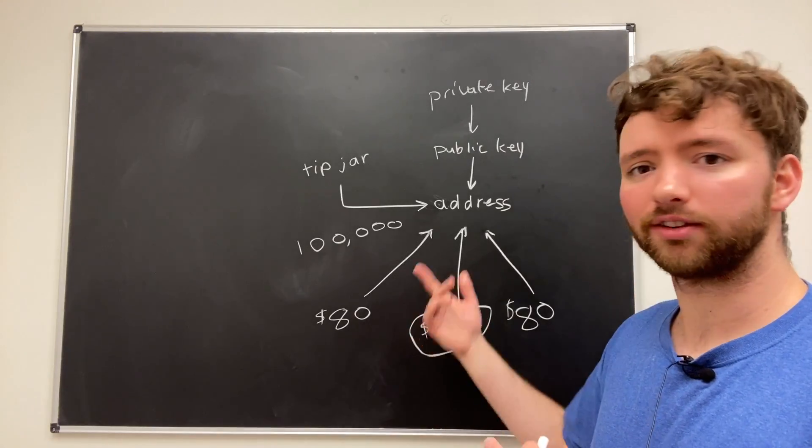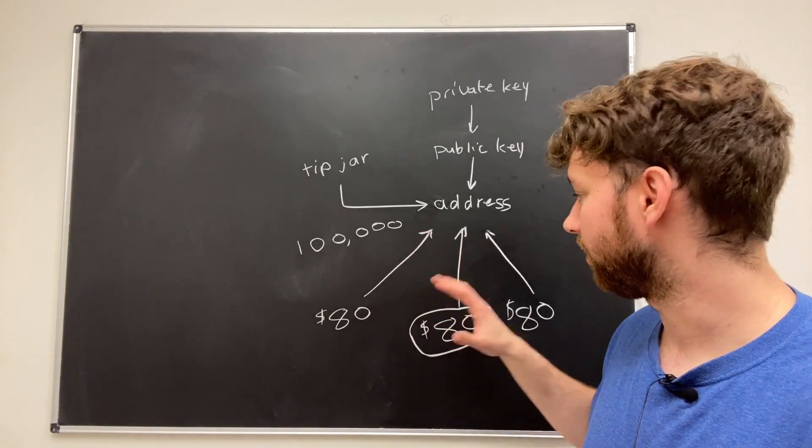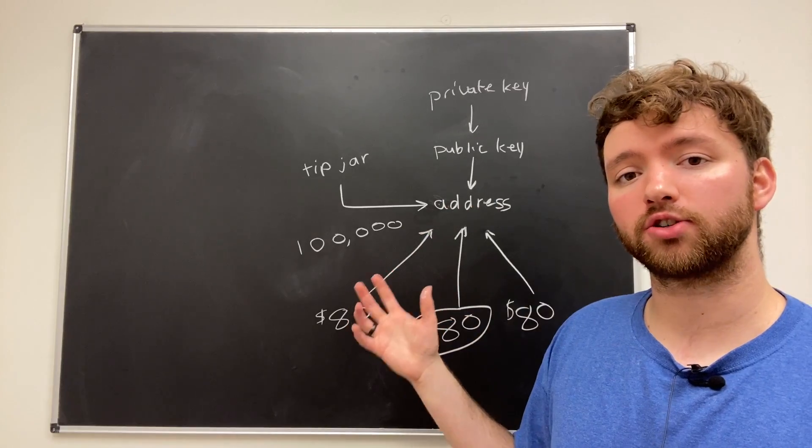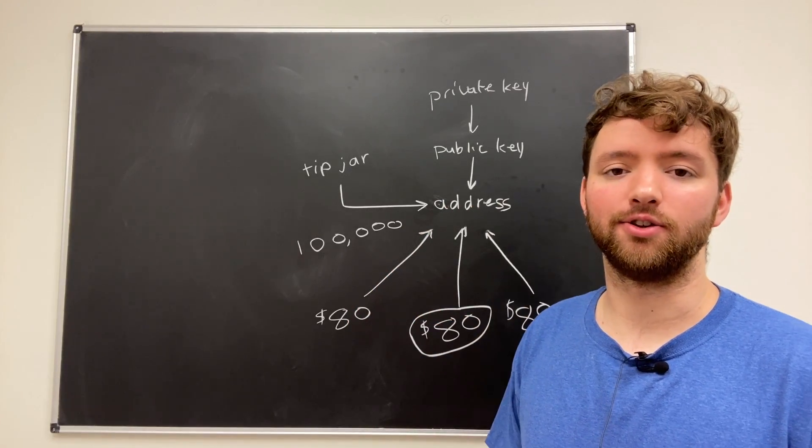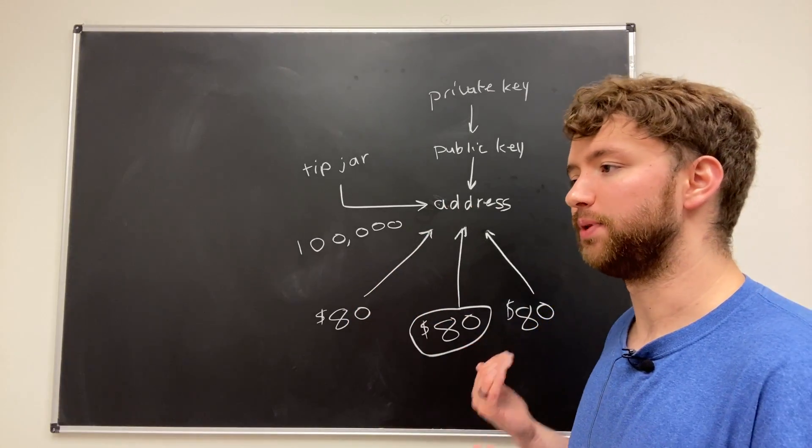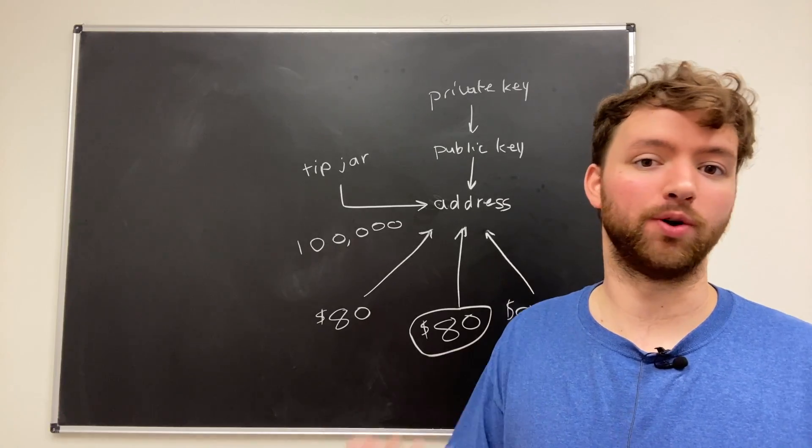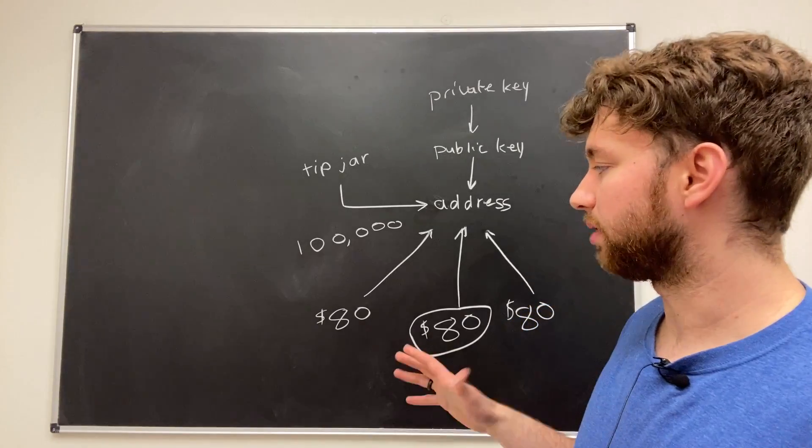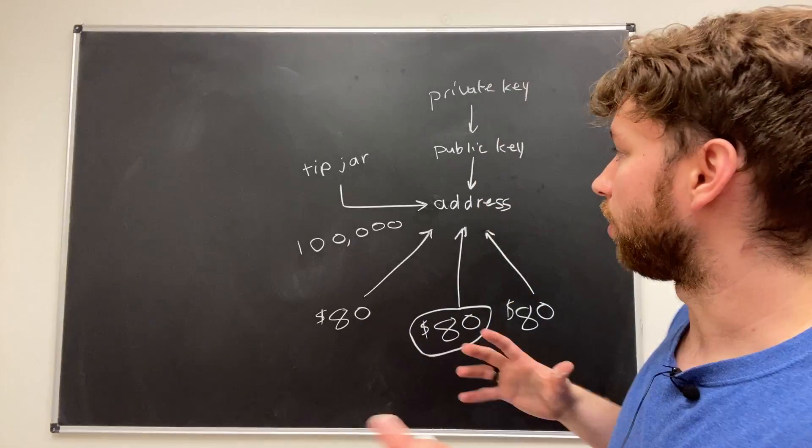So he finds out that this person already paid 80 bucks. So he's just like, yo, I already paid my 80 bucks. Look, there's the transaction history. And that can be seen on the public blockchain. But it's not easy to see who actually sent that money because it's not associated with names. It's just addresses. So it can bring up issues there as well.